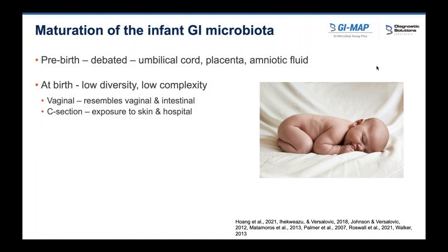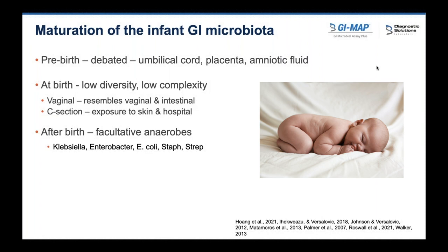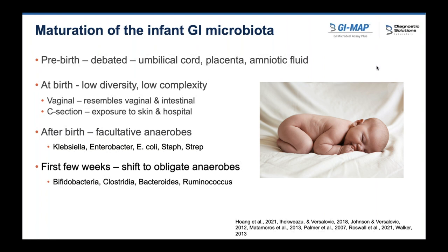For a spontaneous vaginal delivery, you'll get an initial microbiome resembling the vaginal and intestinal microbiome. For a C-section, there's more exposure to skin and the hospital room environment. Vaginal seeding can be a great way to expose the baby to more of the vaginal microbiome. C-section babies generally even out with spontaneous vaginal delivery babies around three to five years. Right after birth, the first colonizers are facultative anaerobes that can handle some oxygen — organisms like Klebsiella, Enterobacter, and E. coli — which then pave the way for obligate anaerobes like bifido, Clostridia, and Bacteroides.